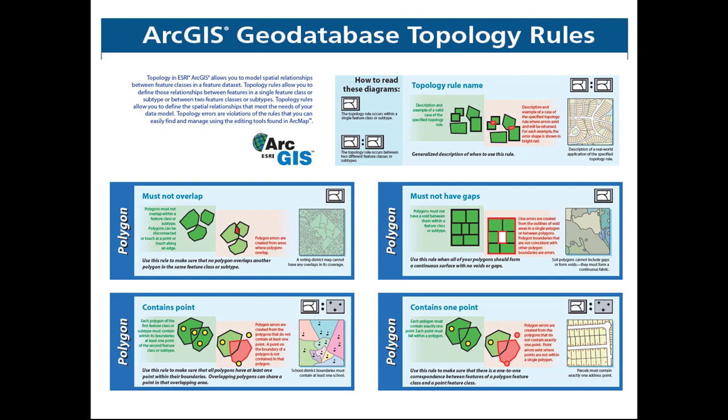Now if I were to set these rules up for my data, notice how the descriptions talk about what the errors might look like. You can use these graphics to help figure out what those error shapes might look like. There are predefined fixes associated with rules, and in the PowerPoint slides and part two reading I tell you what some of those predefined fixes are. Sometimes those predefined fixes are exactly what you want; sometimes they don't do what you need, and in those cases you just use your editing skills to edit your data. The key is remembering that topology validation only finds the problems — it's not going to automatically fix them. Sometimes you have to actually edit your data in conjunction with some predefined fixes after it finds the problem.